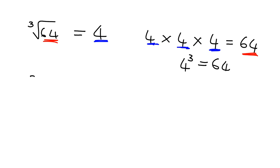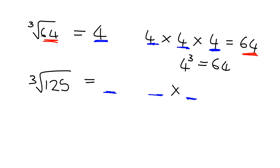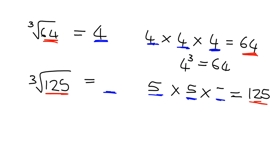Let's do another example quickly. What would be the cube root of 125? What am I asking you here? I'm saying what, multiplied by itself three times, will give you an answer of 125 — in other words, what cubed will give you 125. From your work on cubes, 5 times 5 times 5 is 125, so the cube root of 125 is just 5.